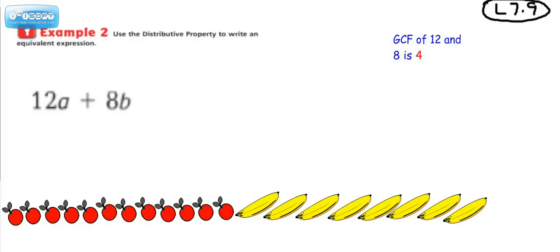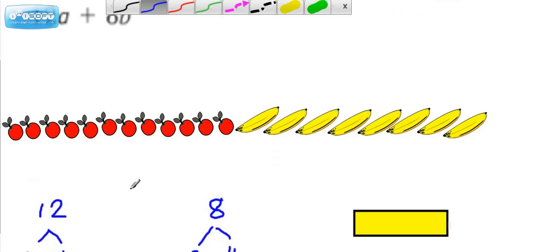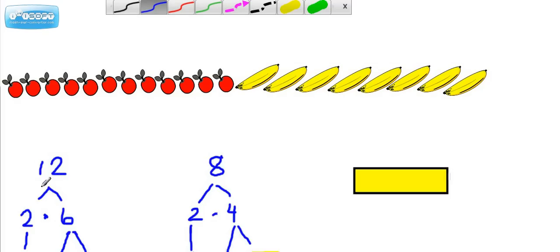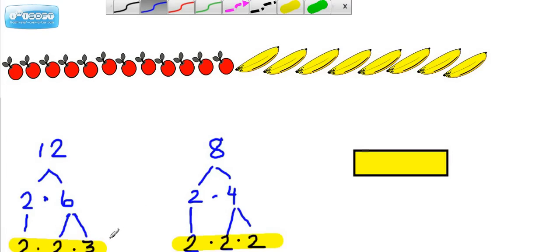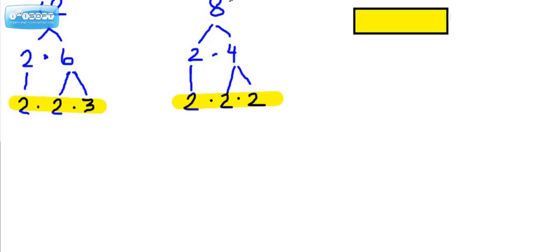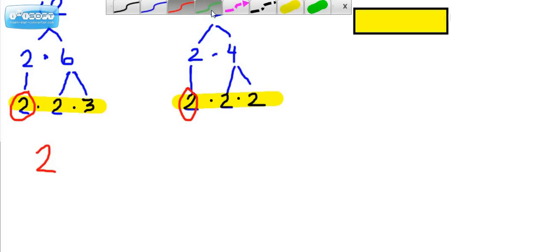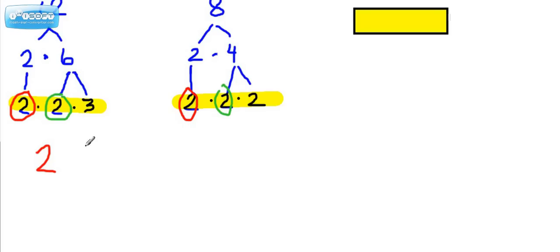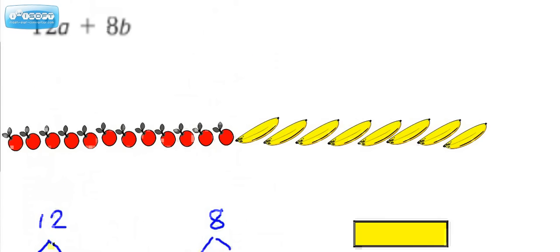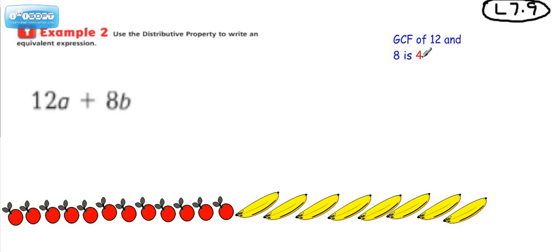So in other words, we're finding the GCF of 12 and 8. I've done that for you already on the bottom where I started it by doing factor trees, and here's the prime factorization for each number. We're going to circle our matches — we have a pair of matching twos, and another pair of twos. We multiply these matches together, which equals 4. So the GCF of 12 and 8 is 4.